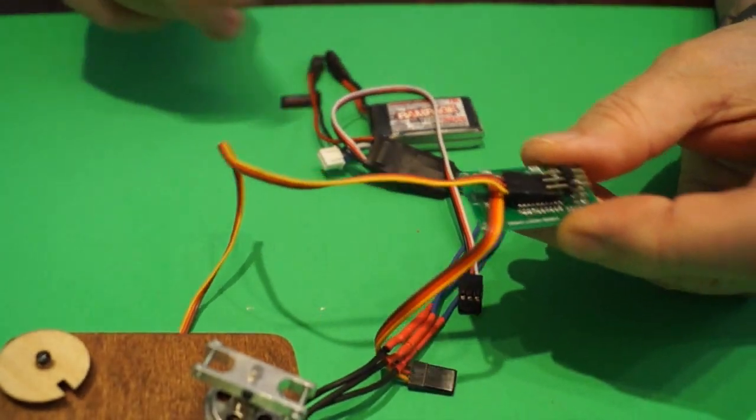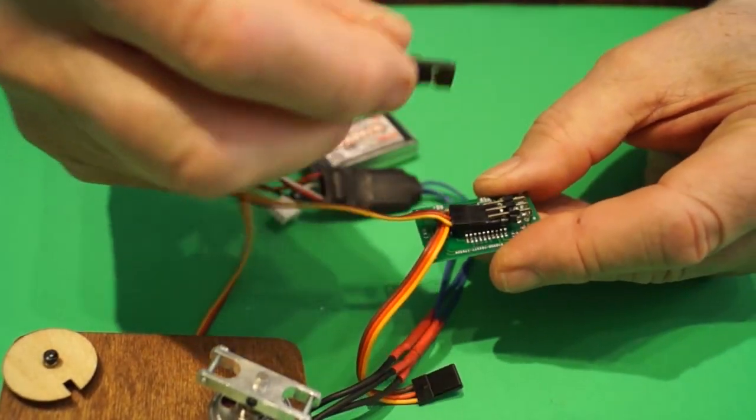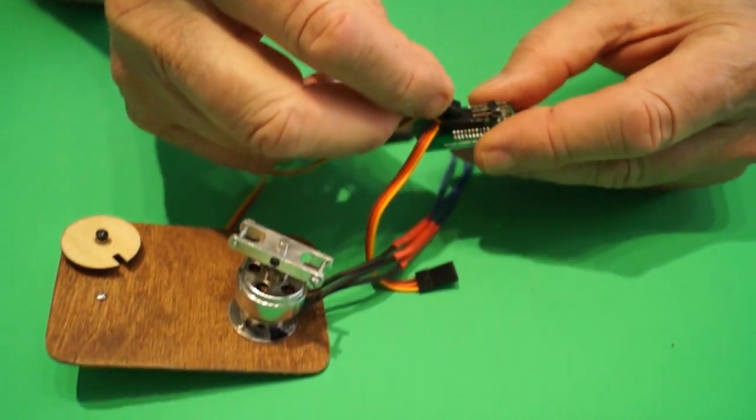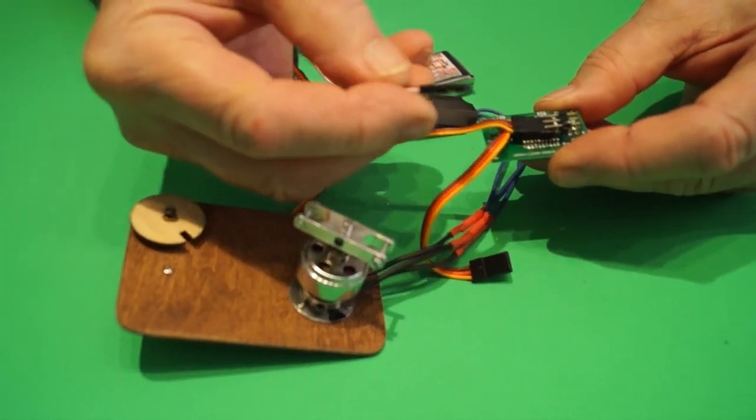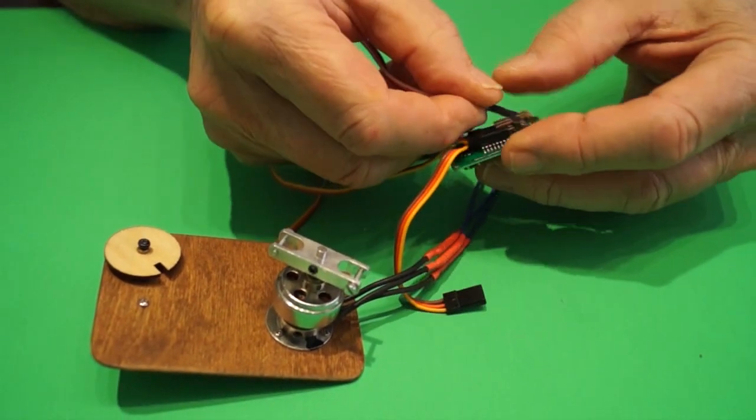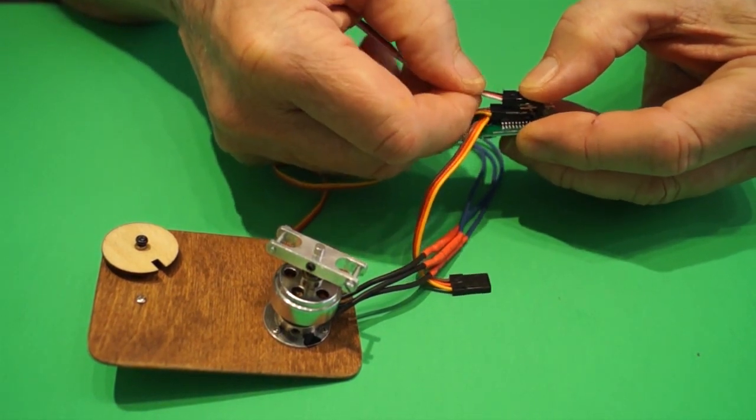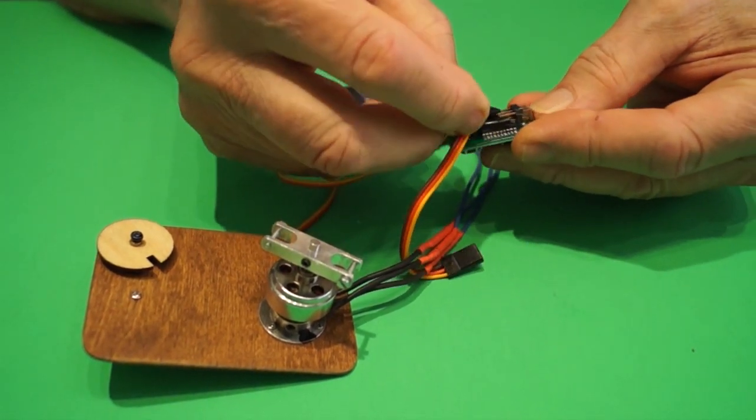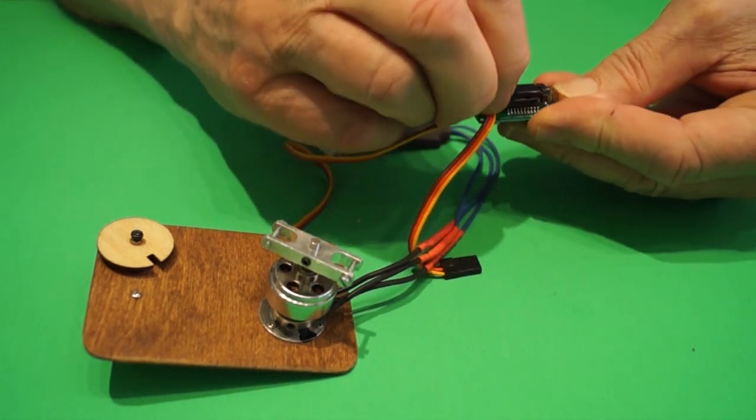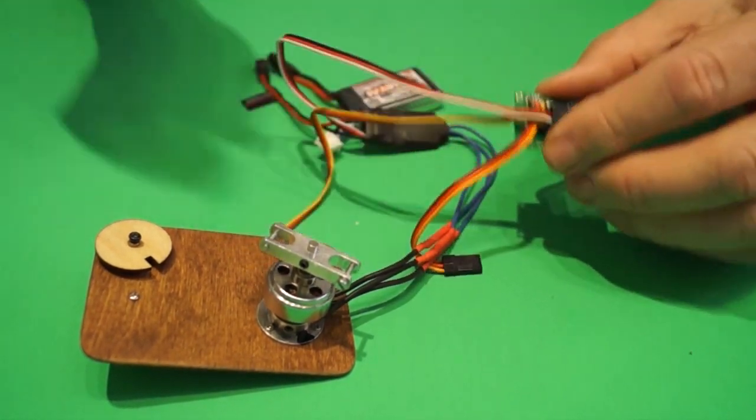Now let's connect our speed controller to the timer. Once again, here's the connector. And I happen to know, I didn't have to look, but here's the black, the red, the white. And I know which order they go in on the timer. And there we are. Now that's all connected.